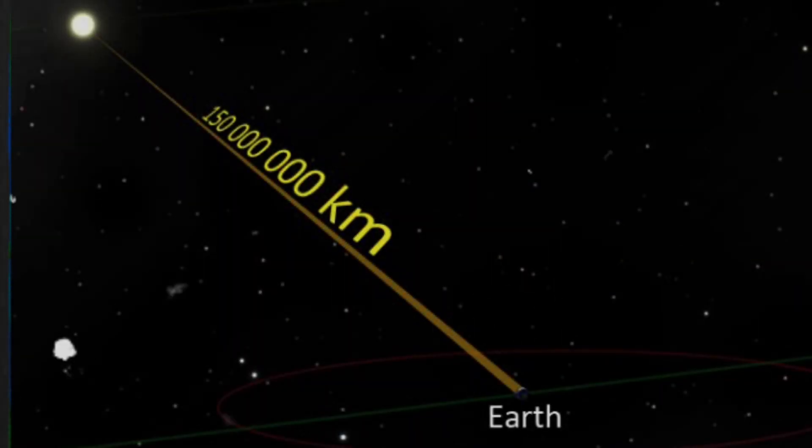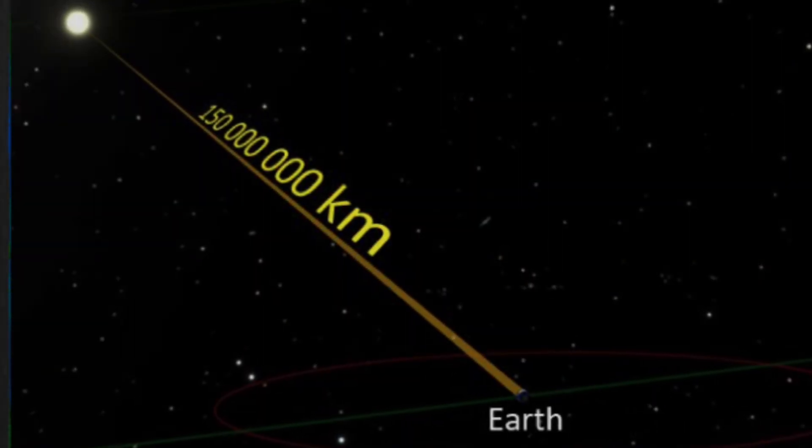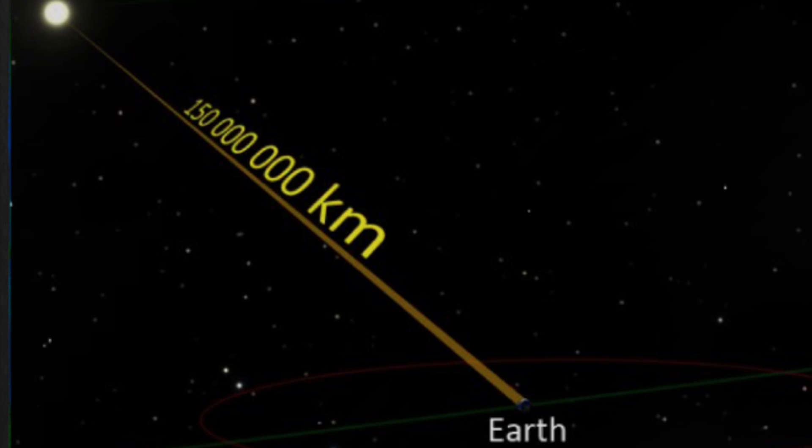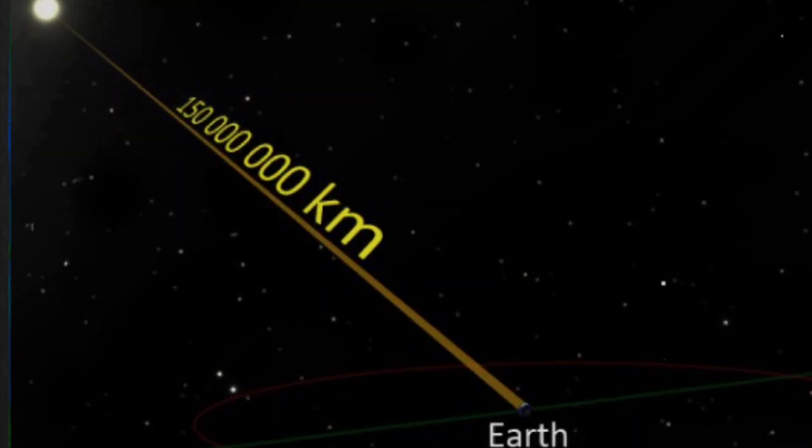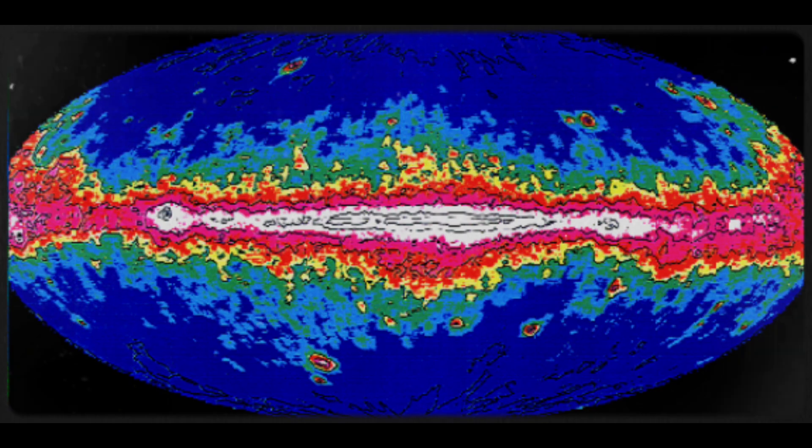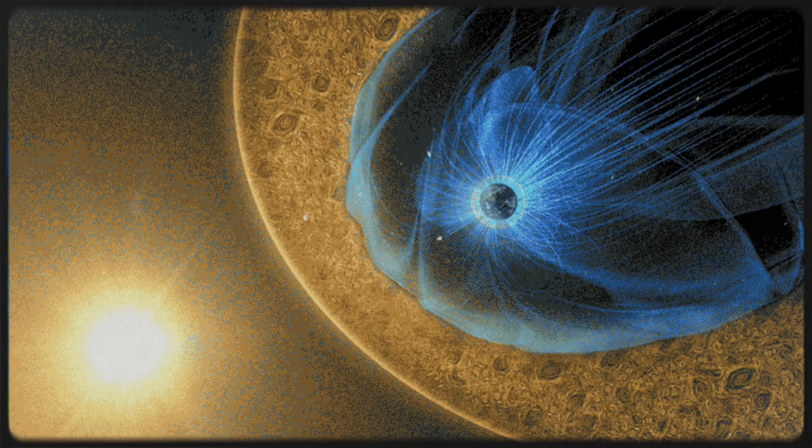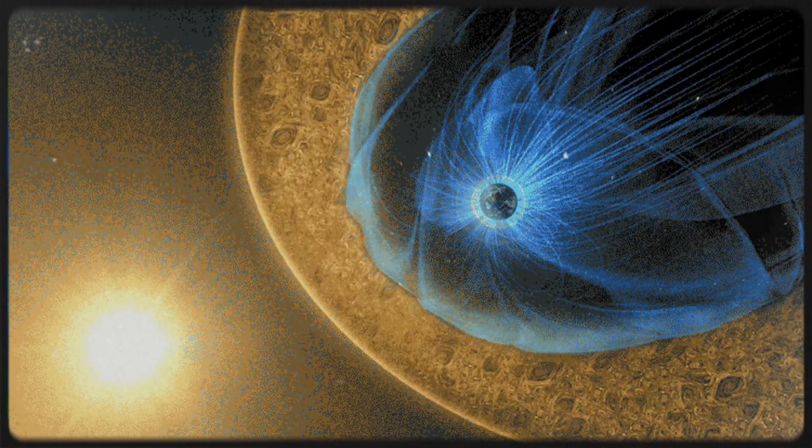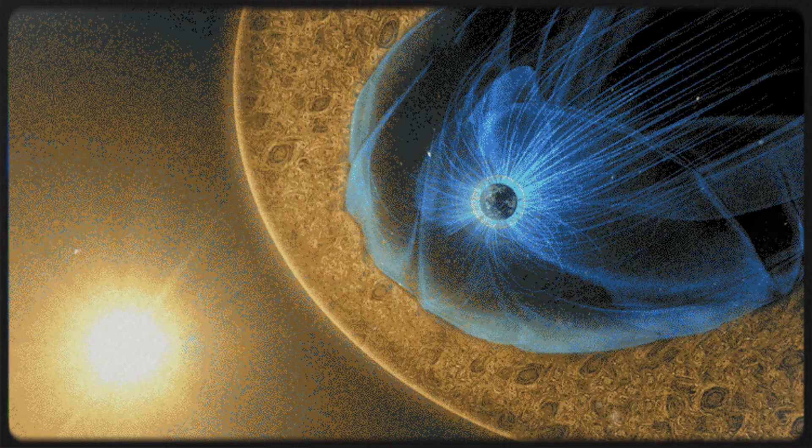In fact, supernovae need to be within about 50 light years of Earth to pose any significant risk, a far cry from Betelgeuse's safe distance. At most, we might experience a slight increase in cosmic radiation levels, but Earth's atmosphere and magnetic field would provide more than enough protection to keep us safe from harm.